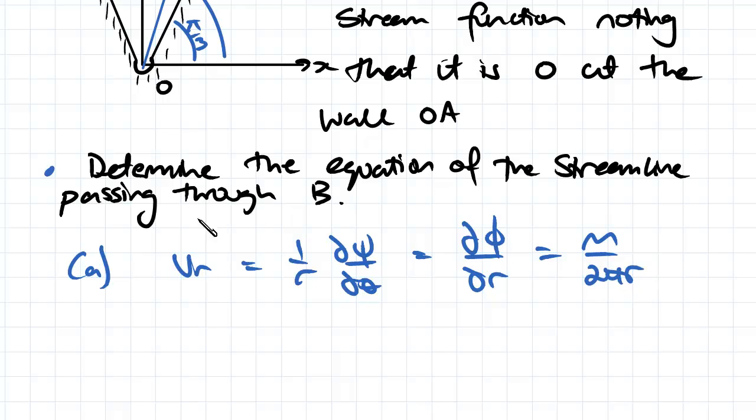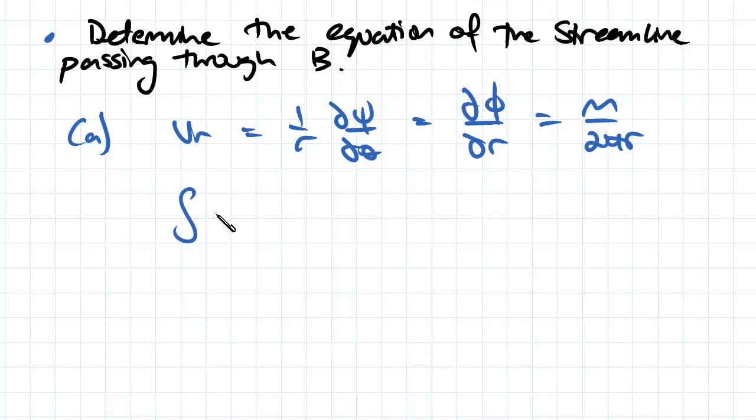So then all we want to really do is we just want to integrate our stream function so that we can integrate the partial derivative of our stream function in terms of theta so that we can then produce an equation for our stream function. Taking the integral of our stream function, what we get is the integral of m over 2π dθ. Therefore, our stream function is equal to m theta over 2π.